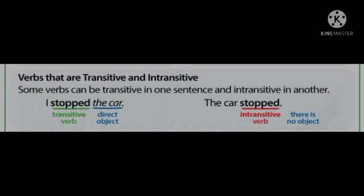Some more examples. I stopped the car. Stopped is transitive verb, and car is direct object. Next, intransitive verb: the car stopped. Ismeh kisi aur object ke zhurt nahi hai. Thik hai? Toh, ye hai intransitive verb.